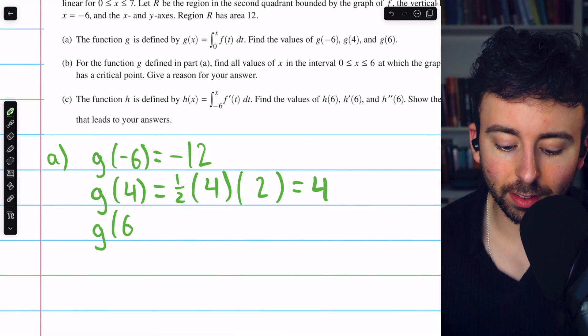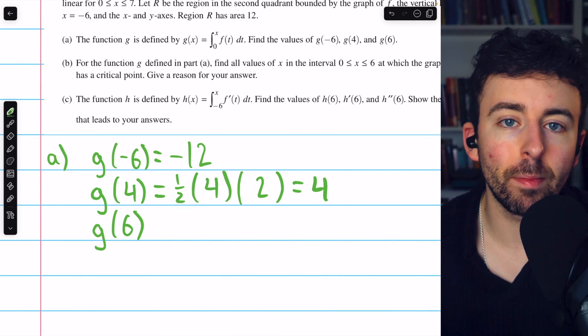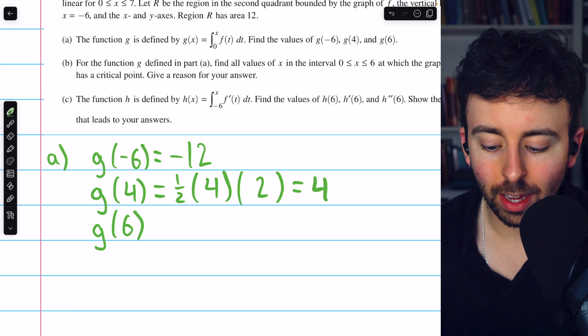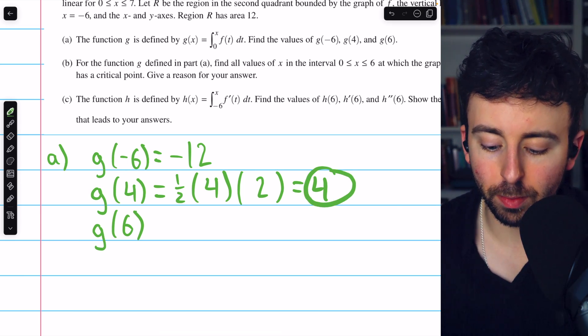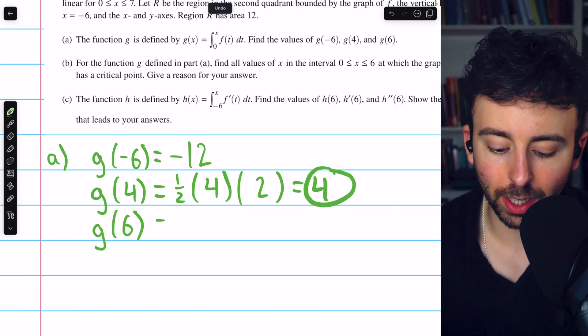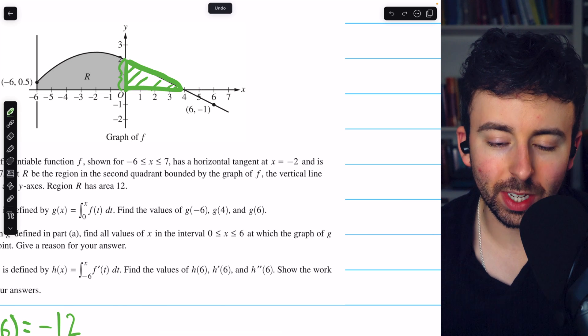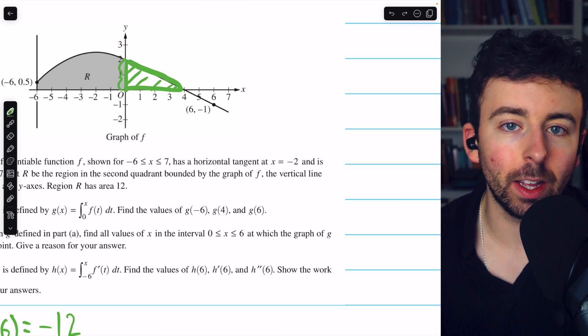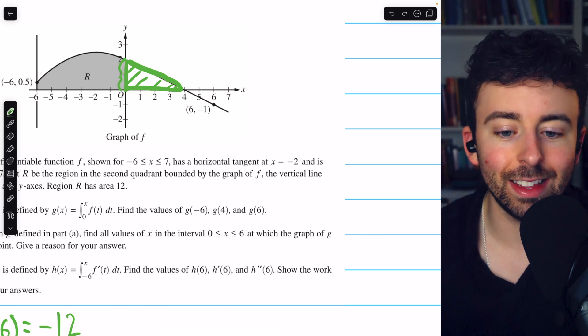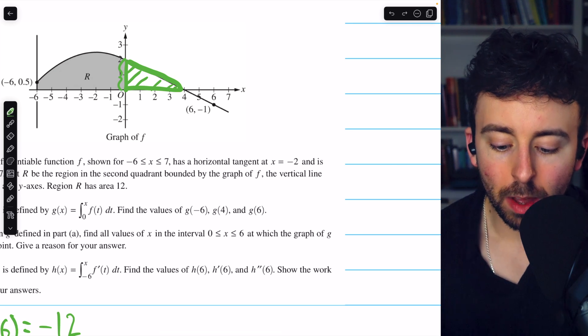Finally, for g of 6, we have to do the same thing, adding up area from 0 to 6. So that's going to be the area from 0 to 4, which we already calculated. It's just 4. And then we need to add this area from 4 to 6. And we can see that's going to be a negative area because the curve is now underneath the x-axis.